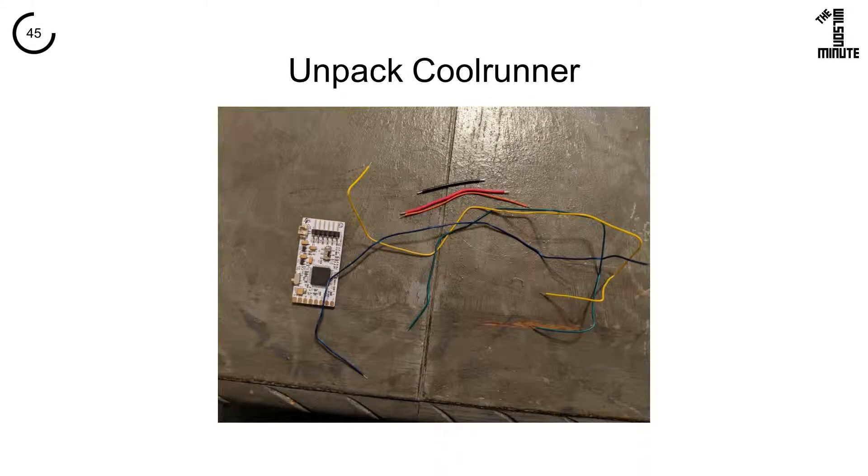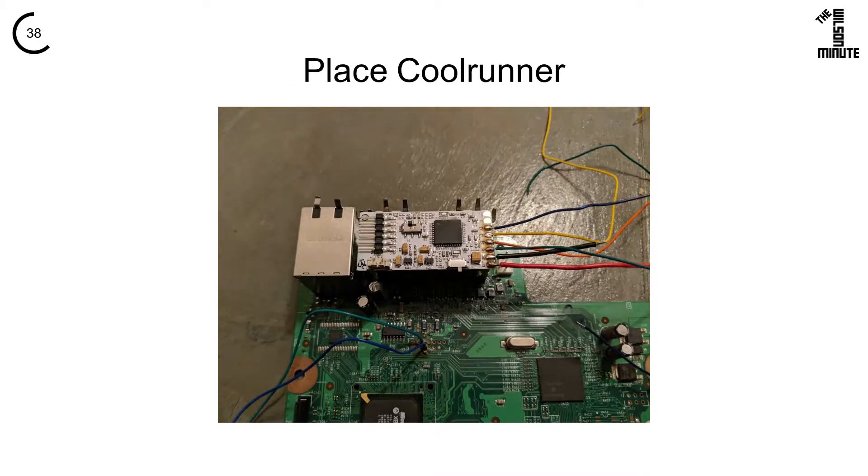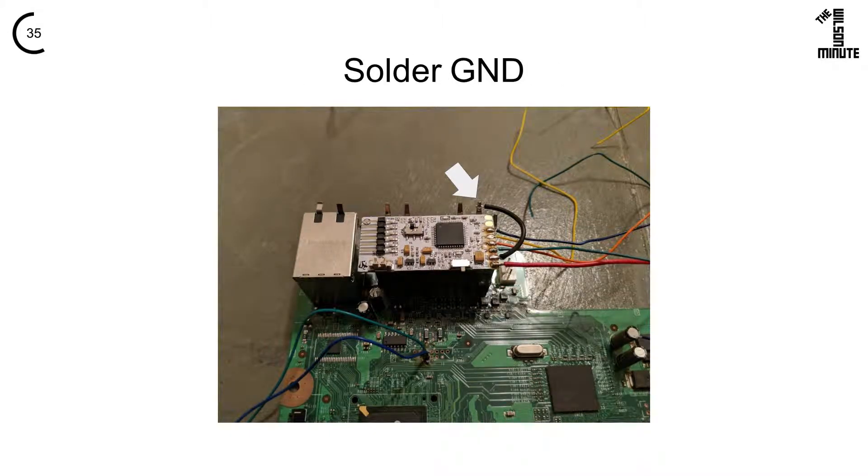Unpack your CoolRunner and the flat cables. We will start by matching the colored wires to the matching colored pads shown here. If colorblind, note the approximate lengths drawn. Use the adhesive pad to put the CoolRunner here. Solder ground to this piece of metal.